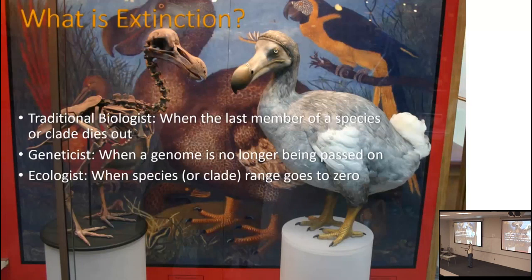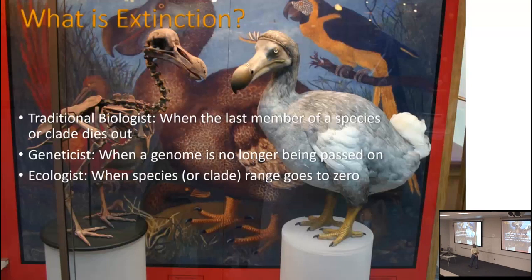Before we deal with the specifics of the Cretaceous-Paleogene mass extinction, we need to deal with what mass extinctions are, and before that, what extinctions are. Depending on your flavor of biology you might define it slightly differently, but it all means the same thing. A traditional biologist might think of extinction as when the last member of a species or an entire clade dies out. A geneticist thinks of it as when a genome is no longer being passed on. An ecologist thinks of it as when the species range goes to zero.